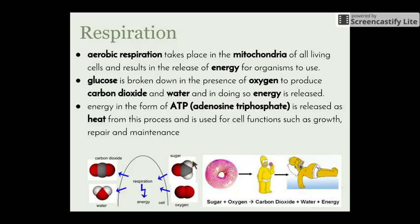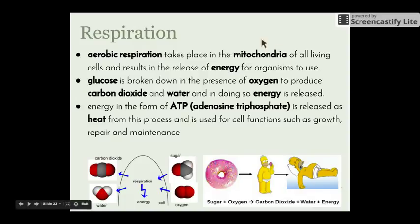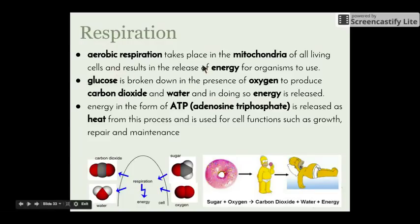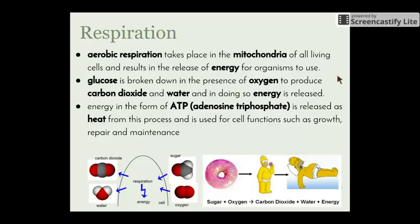Aerobic respiration takes place in the mitochondria of all living cells. Just like the chloroplast, the mitochondria is a special part of the cell where respiration takes place. The difference is that mitochondria are found in every single cell of every single organism — both plants and animals — whereas chloroplasts are only found in plants. The job of the mitochondria is to release energy from glucose and oxygen. The glucose is broken down in the presence of oxygen, so it is classified as a combustion reaction — the breakdown of a substance in the presence of oxygen to give off energy.